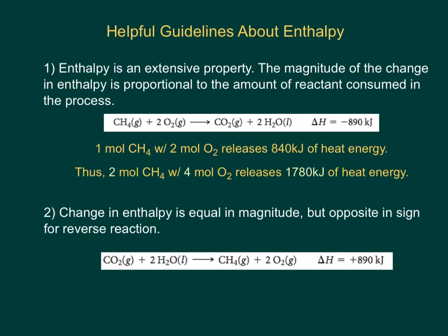There are some helpful guidelines about enthalpy in terms of reactions that are going to help us solve different problems in this chapter. The first one is that enthalpy is an extensive property, meaning that it depends on the amount. The magnitude of the change in enthalpy is proportional to the amount of reactant consumed in the process. For example, if I have one mole of methane reacting with two moles of oxygen gas, I release 890 kilojoules of heat energy. If I double the amount of reactants to two moles of methane reacting with four moles of oxygen gas, I will release double the amount of energy.